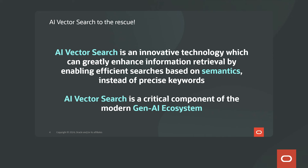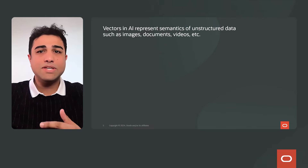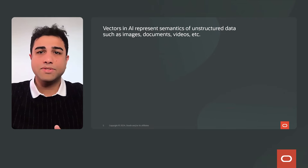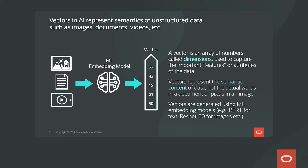All of these are scenarios where you want to search for something semantically. This is where AI Vector Search comes in — an innovative technology which enhances your search results by allowing you to search on semantics and not precise keywords. This has become a critical component of the modern Gen AI ecosystem. Vectors represent semantics of unstructured data — think images, documents, videos. A vector is an array of numbers called dimensions, which capture key features of your data. You use machine learning embedding models to generate vectors; a popular text model is BERT and a popular image model is ResNet.